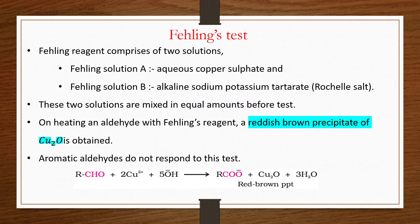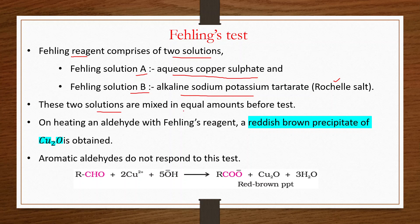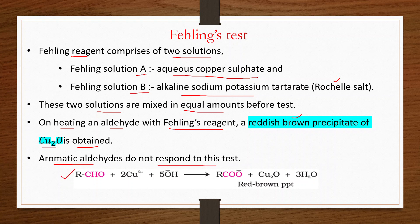Fehling's test — Fehling's reagent comprises two solutions: Fehling's solution A (aqueous copper sulfate) and Fehling's solution B (alkaline sodium potassium tartrate, also known as Rochelle salt). These two solutions are mixed in equal amounts before the test. On heating an aldehyde with Fehling's reagent, a reddish-brown precipitate of Cu₂O (cuprous oxide) is obtained. Aromatic aldehydes do not respond to this test.